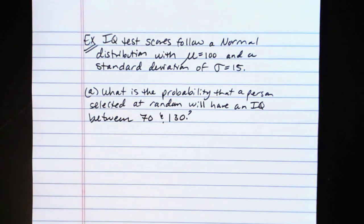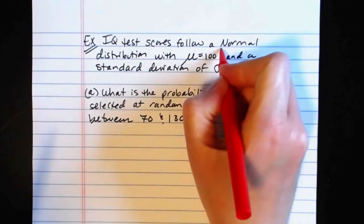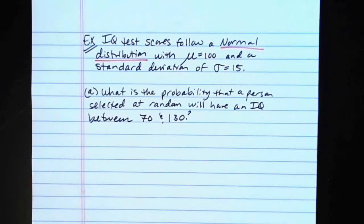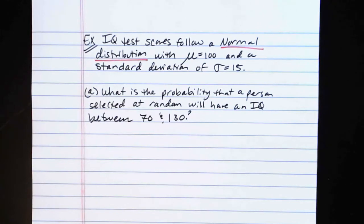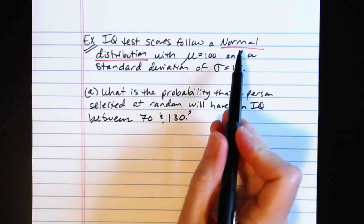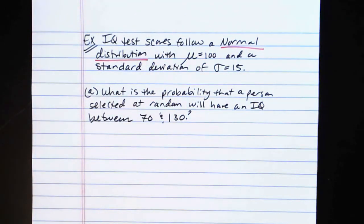First of all, we need to notice that the problem stipulates we're dealing with a normal distribution. If nothing in there talks about the data being normal, mound-shaped and symmetric, or anything like that, then we have no reason to assume we can use the bell curve shape and therefore the empirical rule. But as long as it says normal distribution, mound-shaped and symmetric, or unimodal and symmetric, we know we can go ahead and use a normal model here.